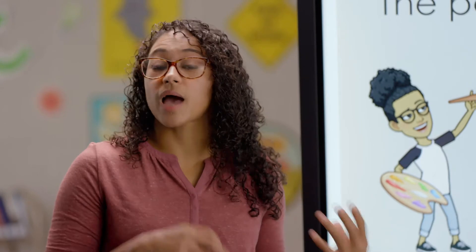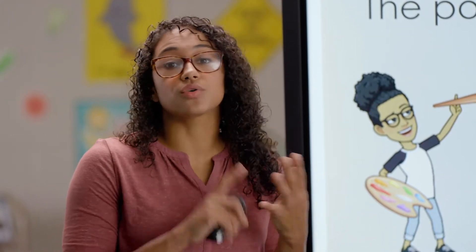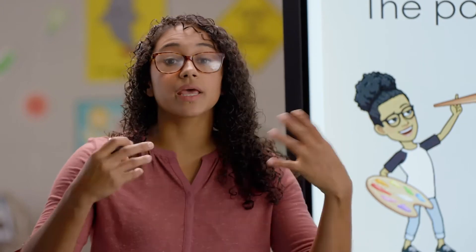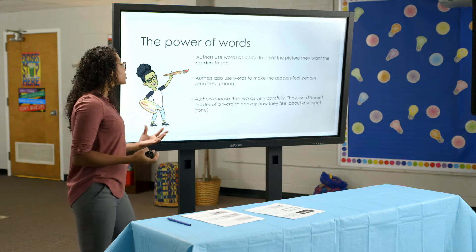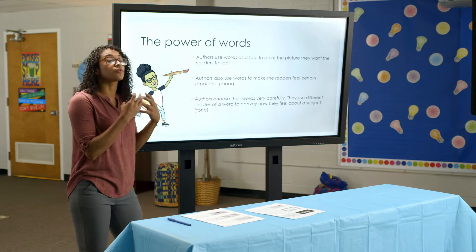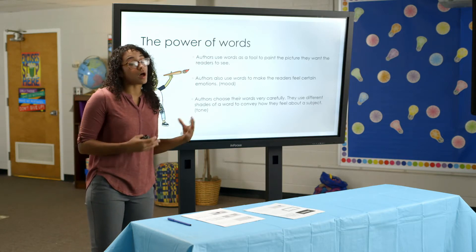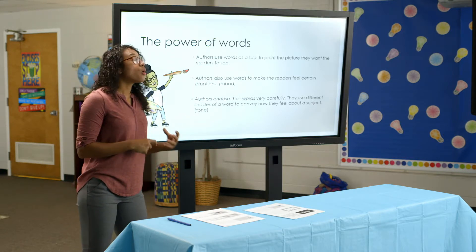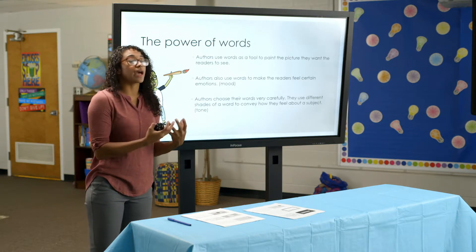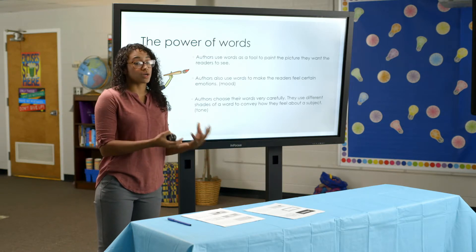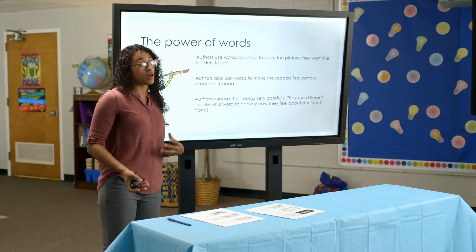Words have a lot of power and authors use their words very carefully. They might use them to create a certain picture or help the readers visualize a certain picture in the story. They may also be used to help the readers feel a certain emotion, which we call the mood, or they may be used by the author to convey how they feel about a certain topic, which we call the tone.